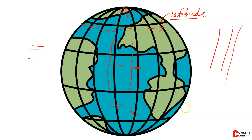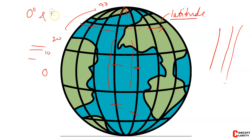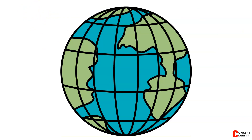We can say the longitude of a place is the angular distance east and west of the prime meridian. Just as I told you the equator is 0 degrees, then 10, 20, then 90 — in a similar way, longitudes start at 0 degrees and end at 180 degrees. Prime meridian means 0 degree — 'prime' means first, so it is known as 0 degree.